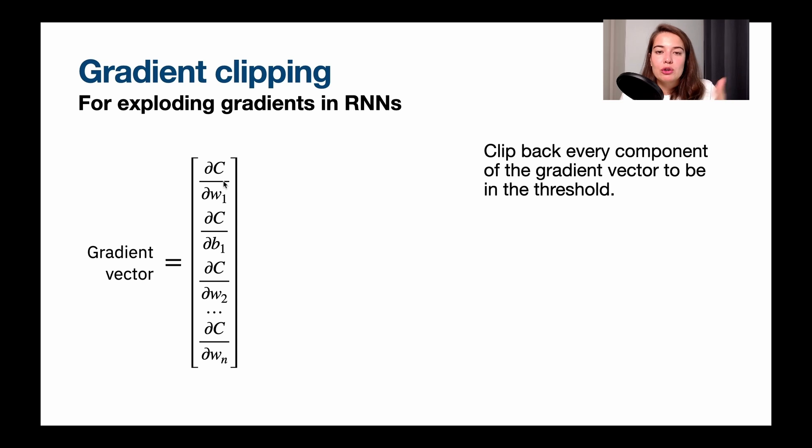And these are the values that we're going to update the weight one by. So if we know if this guy contributes to the cost way more than this one, we might want to update the weight one a little bit more than we update bias one. Okay, so let's talk about gradient clipping then.